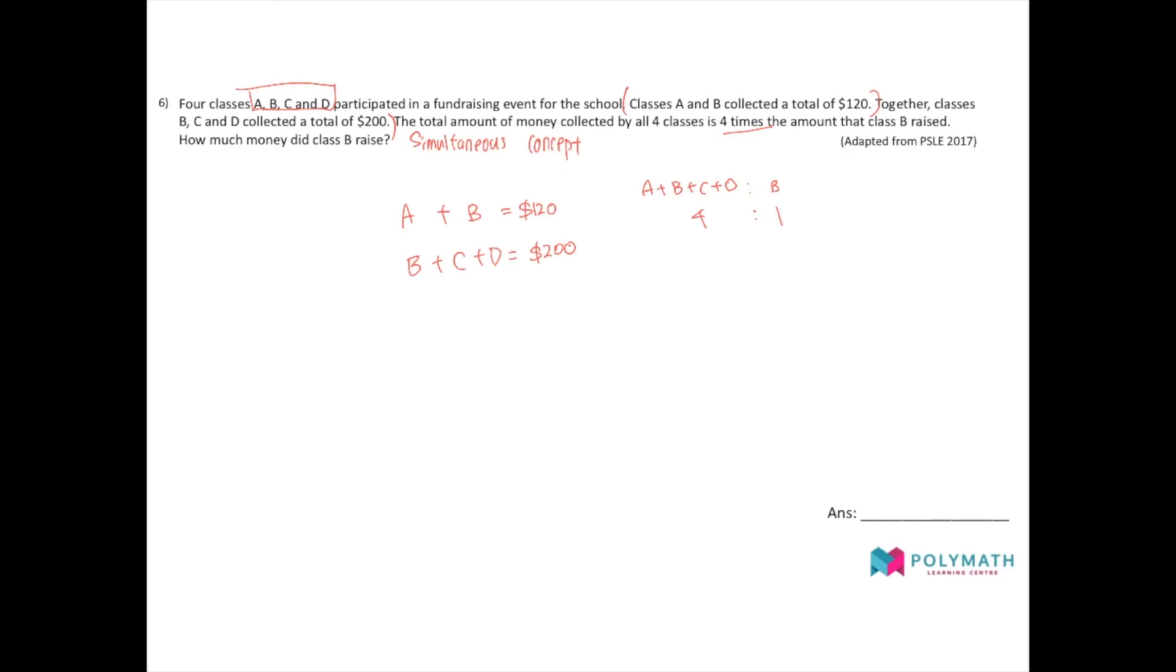And we can do something. We can sum them all together. A plus 2B. There are 2B. One on the left and another on the right. Plus C plus D is equal to the total units of 5.